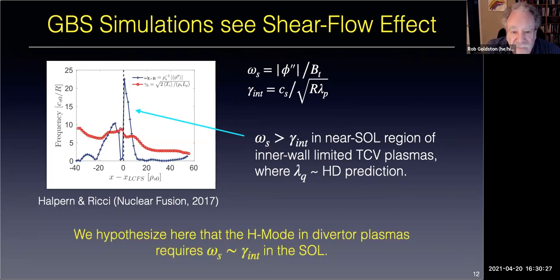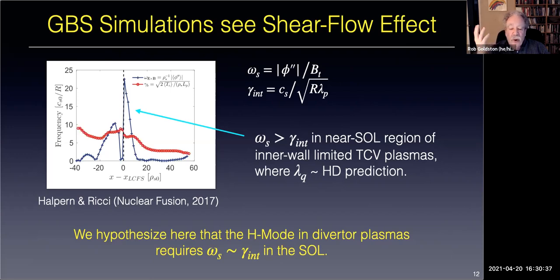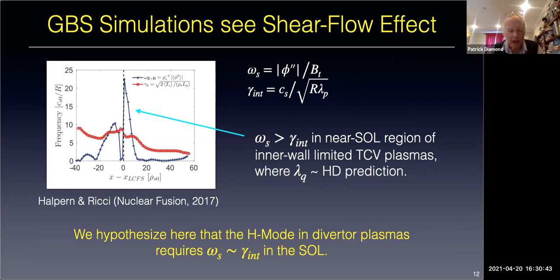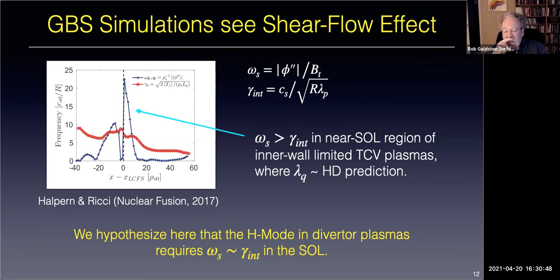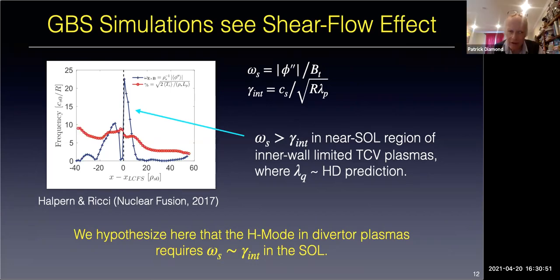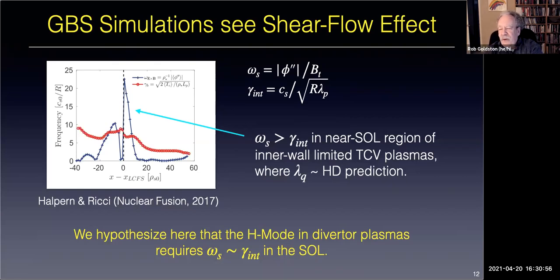Was the Halpern-Ricci calculation linear or nonlinear? Nonlinear. How much of a fluctuation reduction did they get in the region of interest? If you can figure that out from the paper, you're a better man than I—he jumps into his theoretical interpretation without clearly showing the turbulence level from the code, and doesn't clearly show the reduction in turbulent flux either. He shows the theory but perhaps not the simulation evidence directly.